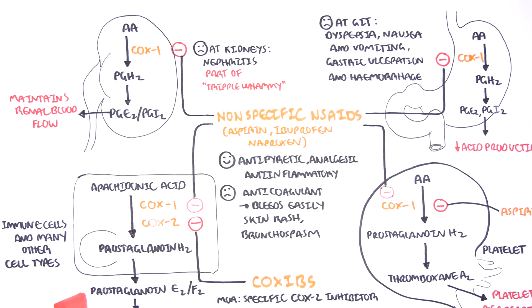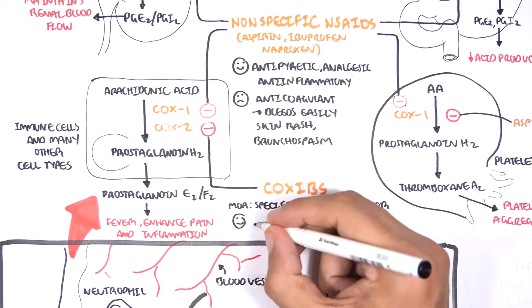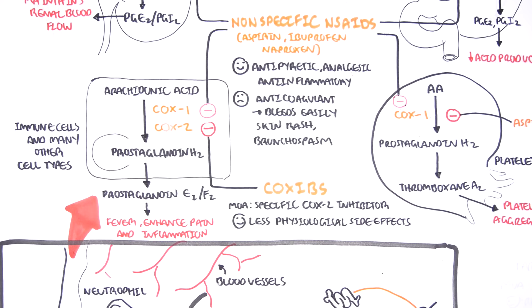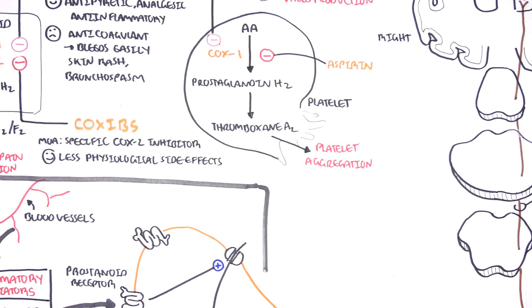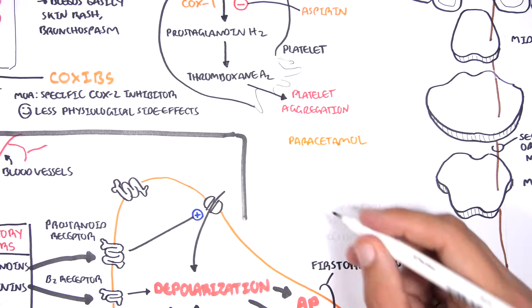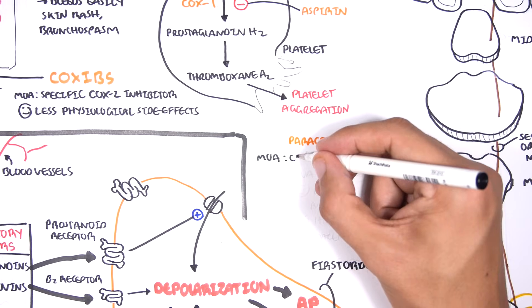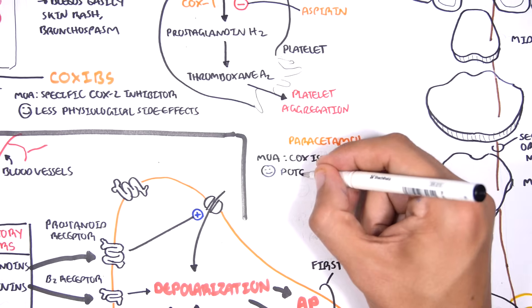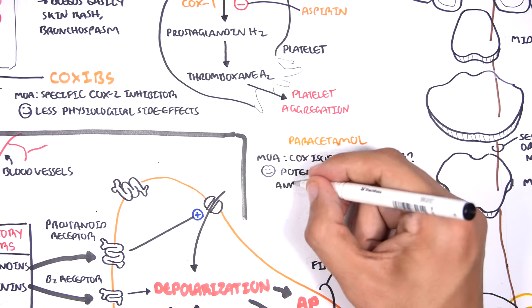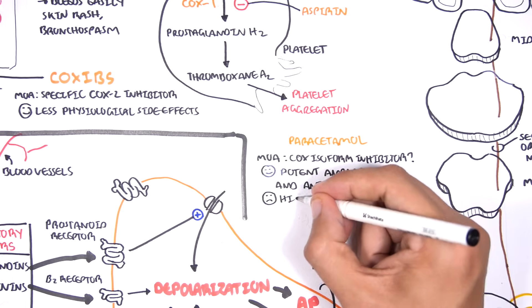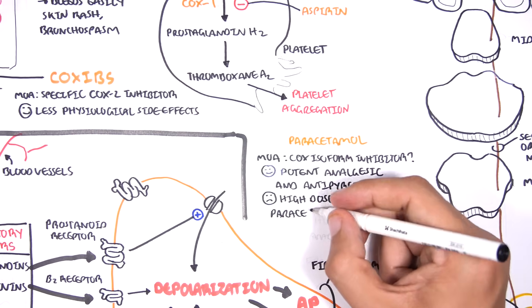We just talked about non-selective or non-specific NSAIDs. Now let's focus on selective or specific NSAIDs. Selective NSAIDs were created to reduce the side effects of non-selective ones. Another very common drug is paracetamol, or you can know it as Panadol. It's thought to elicit its mechanism of action in a similar way. However, it is unclear actually how it works, but potentially it inhibits an isoform of the COX enzyme. It is a potent analgesic and antipyretic, but has no anti-inflammatory role. Important to note that high doses of paracetamol can lead to liver toxicity.